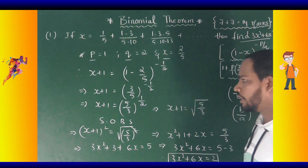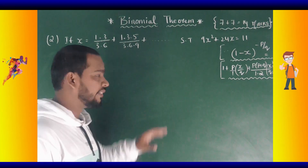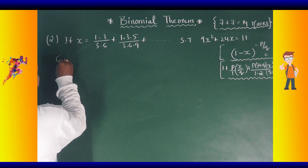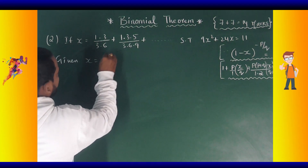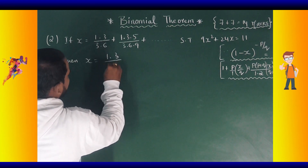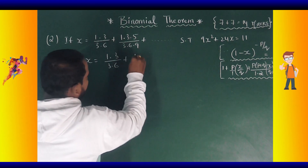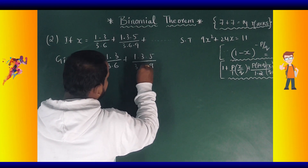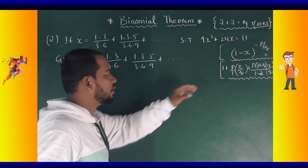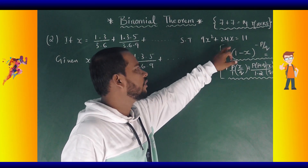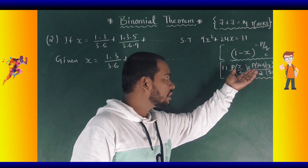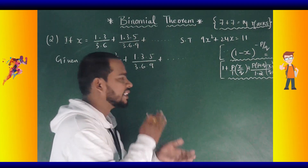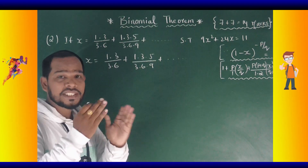This is our answer for the first sum. Second sum: given a series, what we have to prove is 9x² plus 24x equals 4. Here also we can use the same formula.